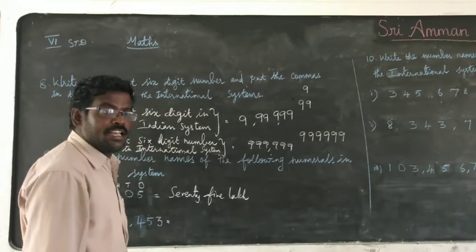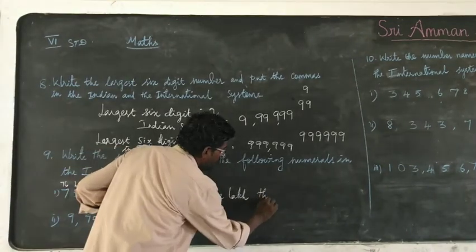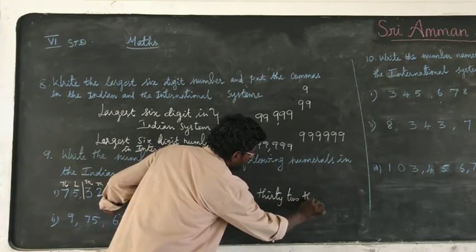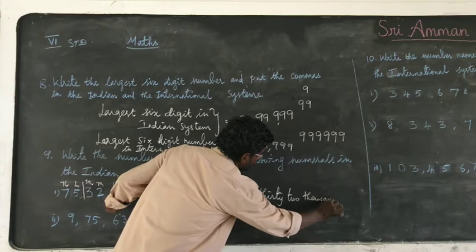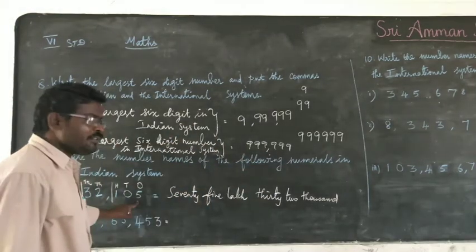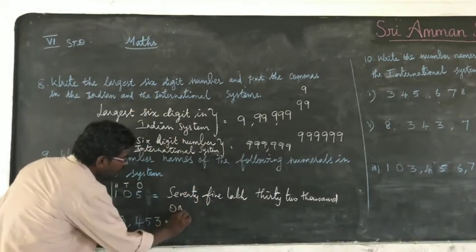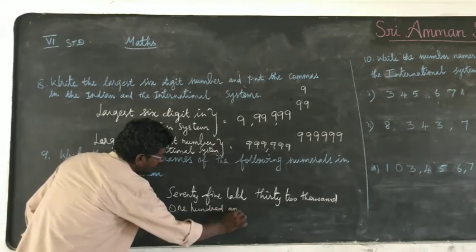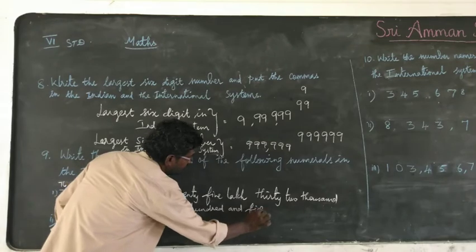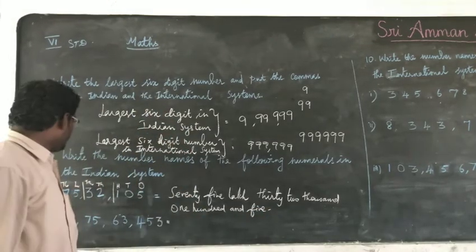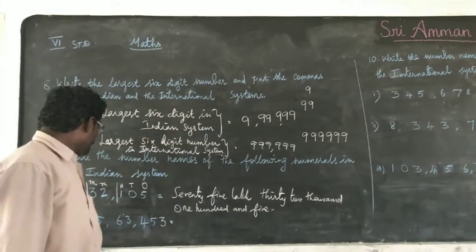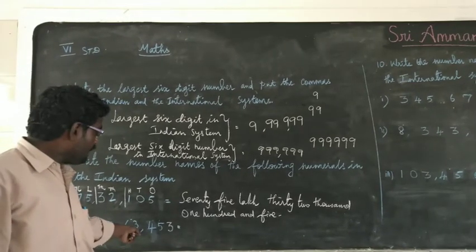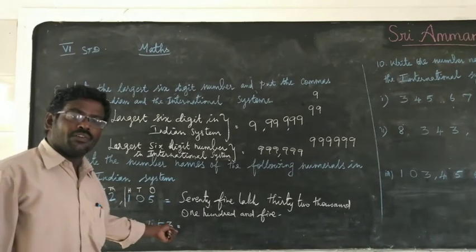How many thousands? 22, so 32,000. Next, you need 105. So the number reads: 9 lakhs, 75 thousands, 63,453.